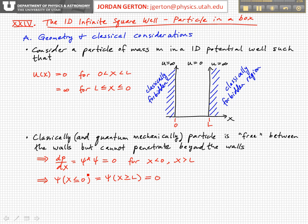In other words, the only way for that to be satisfied rigorously is for the wave function at positions less than or equal to zero and at positions greater than or equal to L to equal zero. So the wave function has no amplitude in these classically forbidden regions.